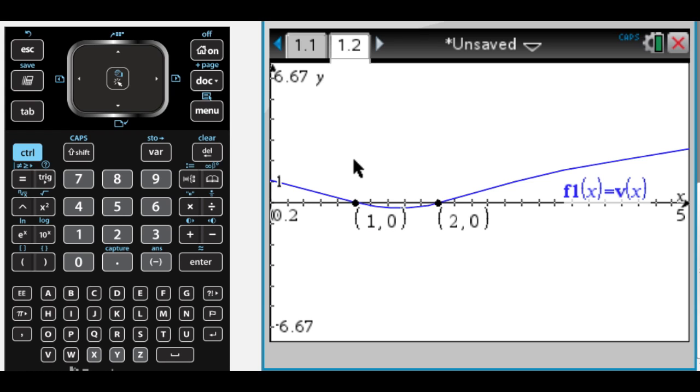So the particle changes direction at t equals 1 and t equals 2 because v of t changes sign at those values. So that would be my reasoning. v of t changes sign at t equals 1 and t equals 2, therefore the particle changes direction.